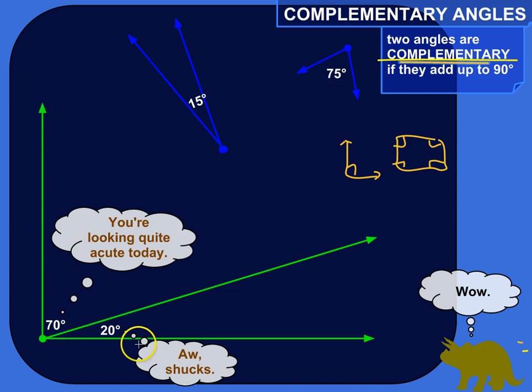So here they could be part of two angles that are adjacent that are part of a larger 90-degree angle like that. So 70 and 20. 70 plus 20 is equal to 90.